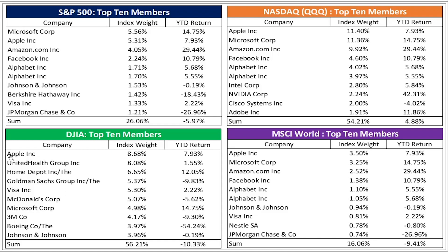What accounts for the performance differences this year? With the Dow, there's Apple and Microsoft, but what's really going on is what's not in the Dow — you don't see Amazon, Facebook, or Google. That's why it is performing the worst. For the S&P versus the NASDAQ: the S&P is down 6% while the NASDAQ is up 5. Once we get out of the tech names, you'll see big financials in the S&P 500 — Berkshire Hathaway, down about 18.5%, and J.P. Morgan, down 27% — which do not show up in the NASDAQ to the same magnitude.